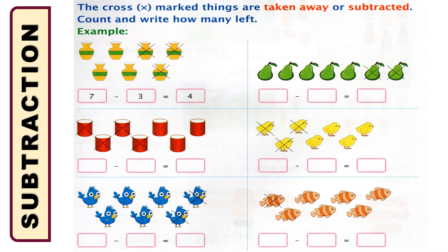In the right part, we have seven fruits. Among them, two were cross-marked. So how many are left? We can write seven subtraction two is equal to how many remain. Counting: one, two, three, four, five — we have five green fruits. So the answer will be five.